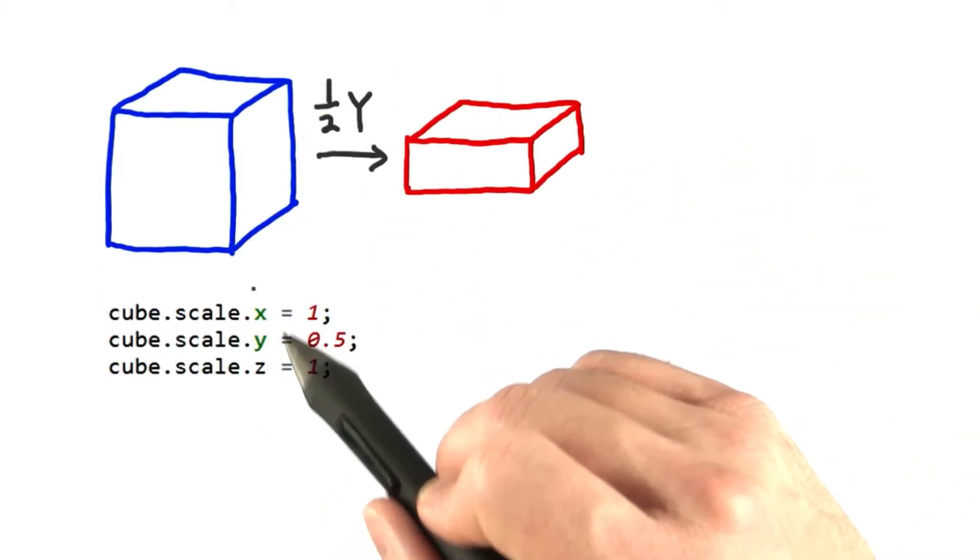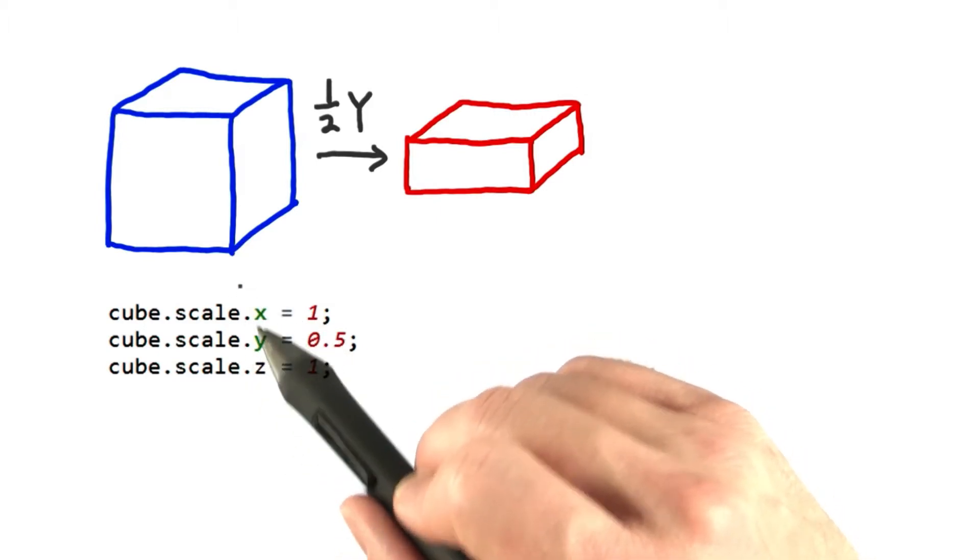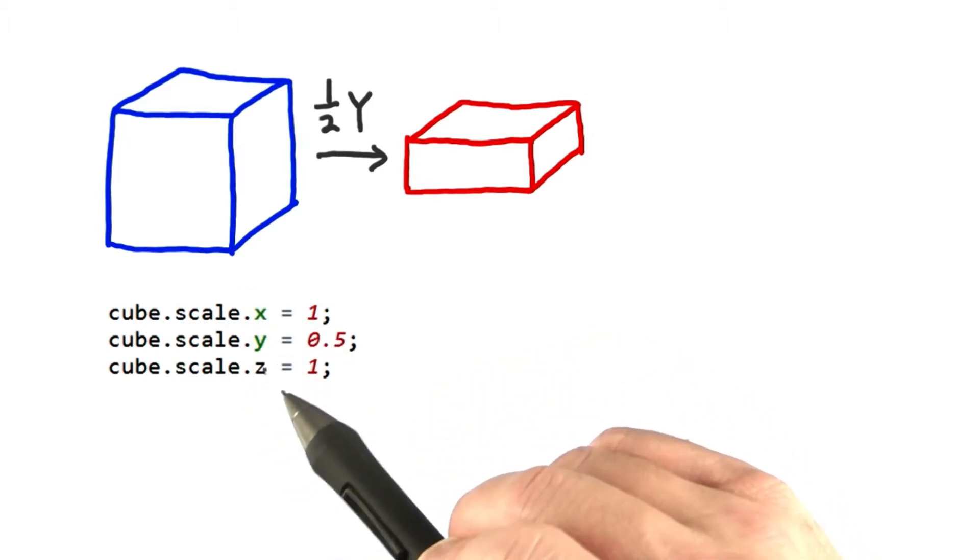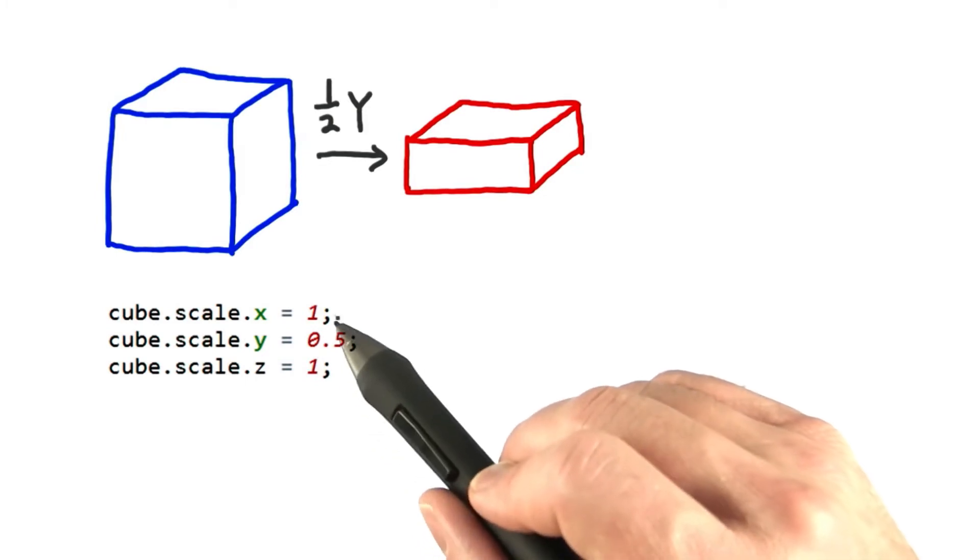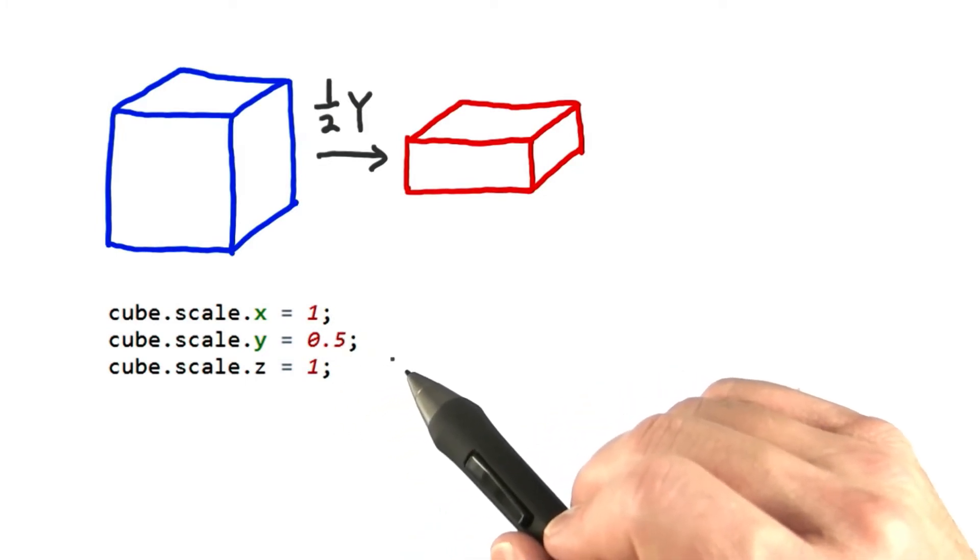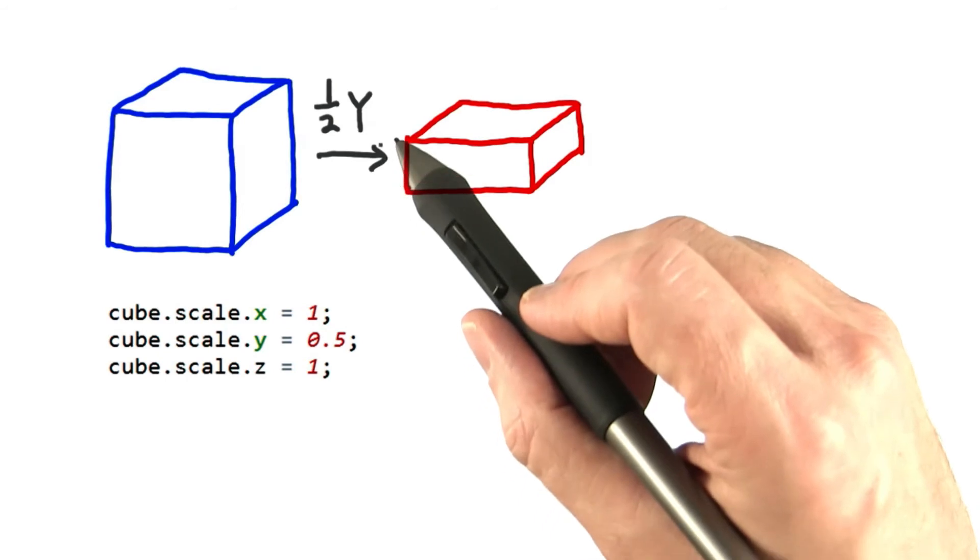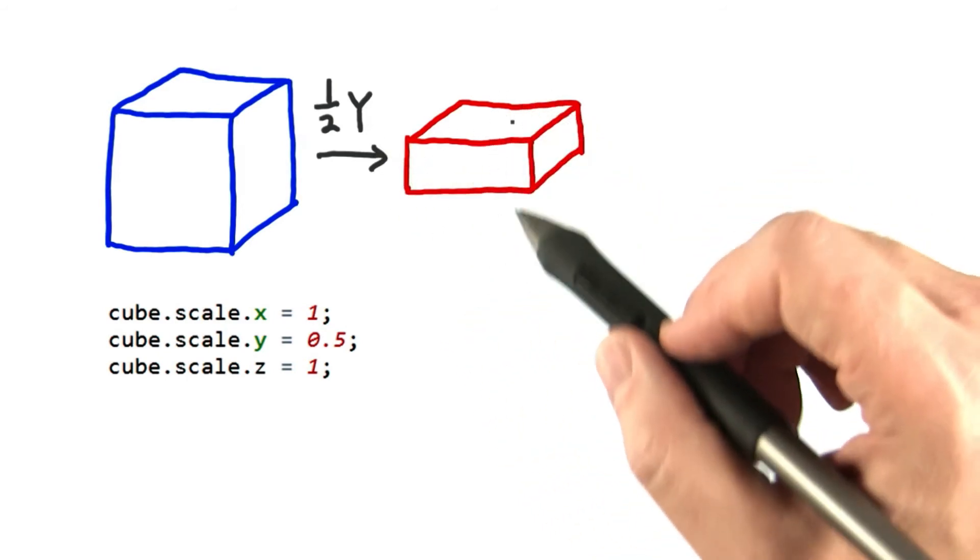In fact, you can scale an object differently along each of the three axes: x, y, and z. This code is scaling the object along the y-axis, but not the other two. A number less than one means you're making the object smaller. The scale shown here has the effect of compressing it along the y-axis.